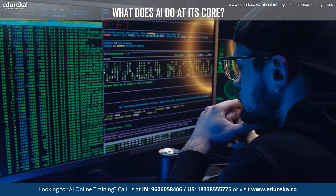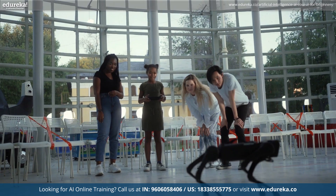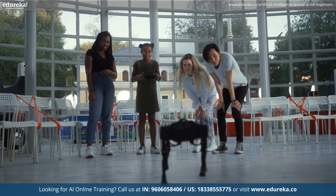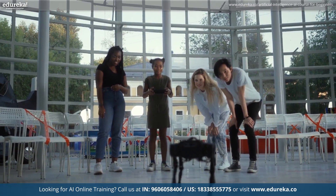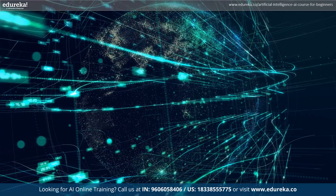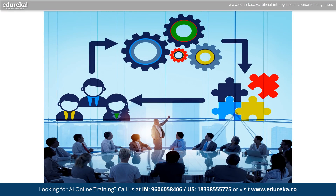Have you ever thought about what AI does at its core? AI works by analyzing large amounts of data to find patterns and useful information. It learns from this data to get better at tasks over time. With this learning, AI can make decisions, predict future events, and automatically perform tasks that would normally need human intelligence. This helps businesses and organizations work more efficiently, making computers smarter and more helpful in everyday life.